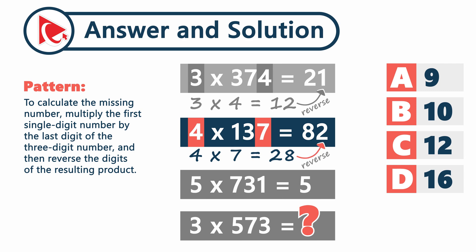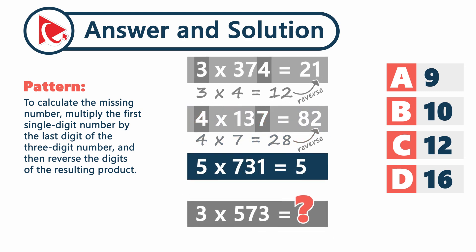5 multiplied by 731 equals 5 multiplied by 1 and equals 5. Since 5 is a single digit number and cannot be reversed, it stays as 5.